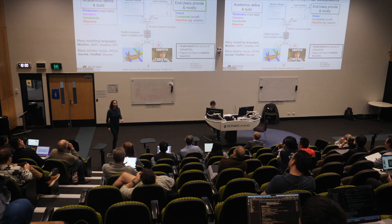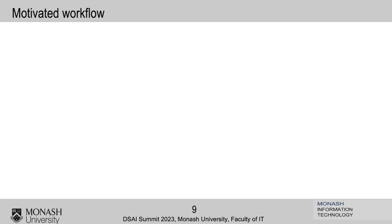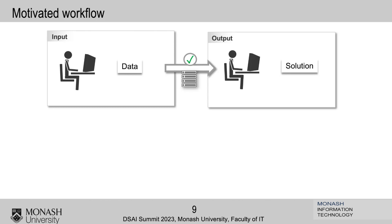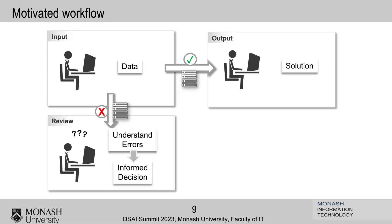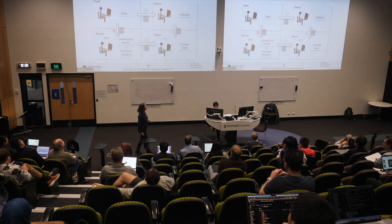What I want is something that gives me an inkling of why — what is the source of the infeasibility — and then helps me restore the feasibility. I want a human-centered approach. My motivated workflow: the user gives me data, if the system finds a solution it gives it to me, and otherwise it helps the user understand the errors and tells them how to modify things — like changing from car to plane in Google Maps — and then I get an actual solution.